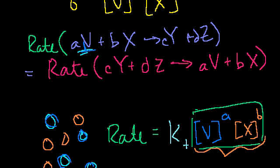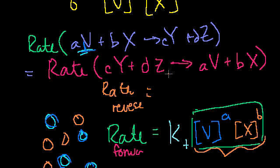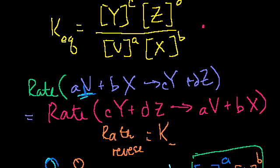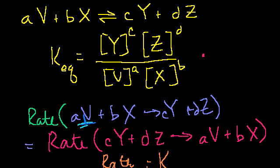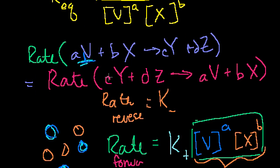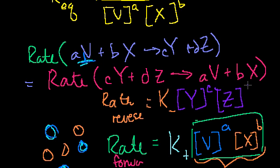Now for the reverse reaction rate, we apply the same logic but going in the other direction. The reverse rate equals some other constant K-minus, times the concentration of Y to the C power — because we need C of them present at the same time — times the concentration of Z to the D power.